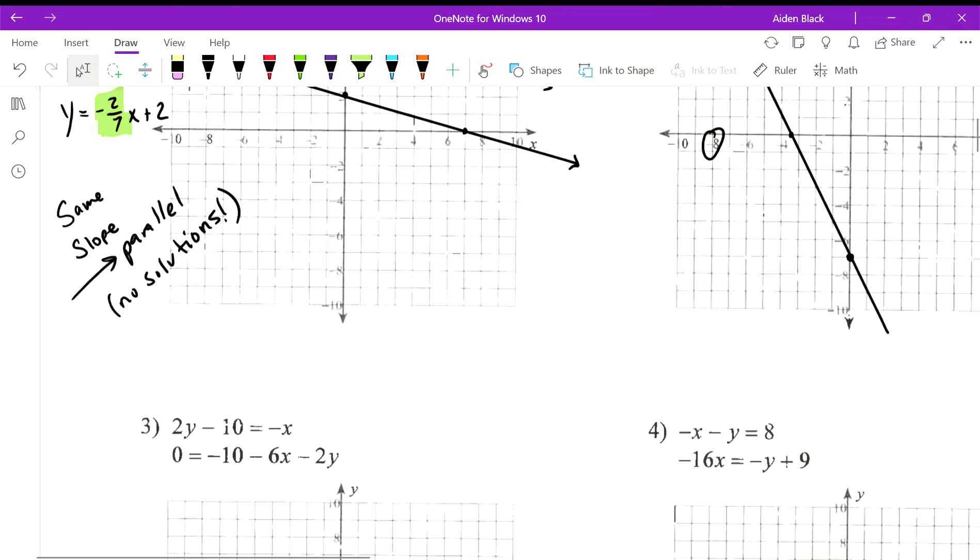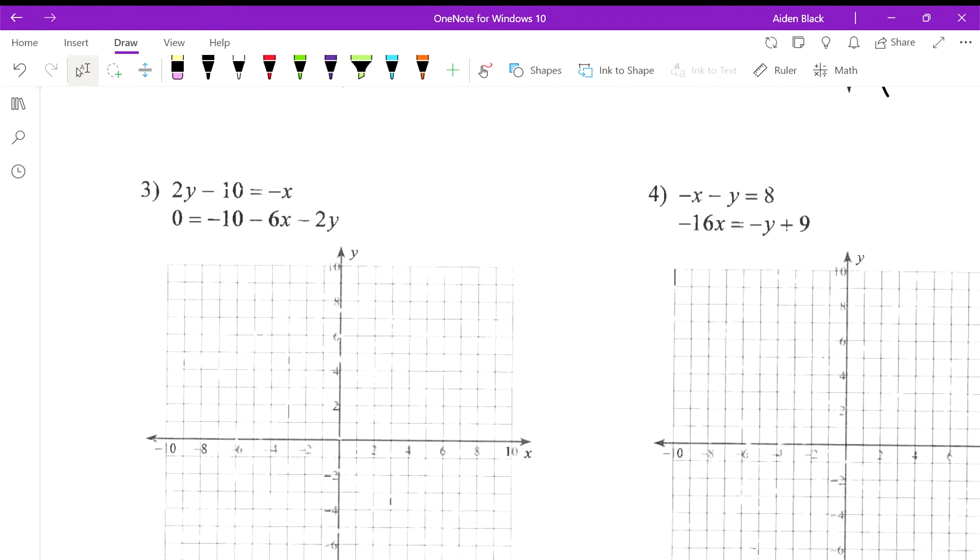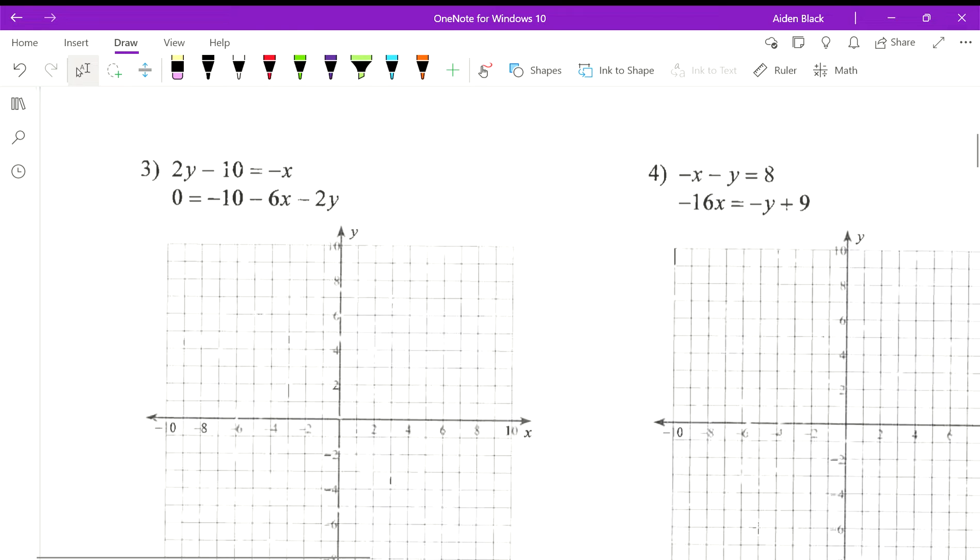Okay, number three for the unit three review. Here we're solving by graphing, so what we want to do is rewrite this equation in slope-intercept form, y equals mx plus b. What we need to do is add 10 to both sides of this first equation and then divide both sides by 2.